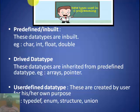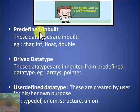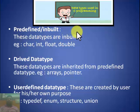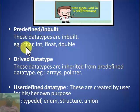Now we'll look at the types of data types used in C programming. We generally categorize them into 3 categories: predefined or inbuilt data types, derived data types, and user-defined data types. Predefined data types are inbuilt — they are given to us by C itself and we do not need to define them. Examples are char, int, float, double, and void.